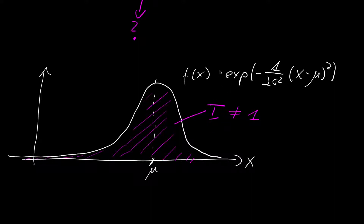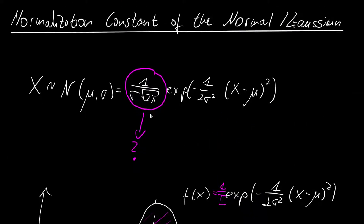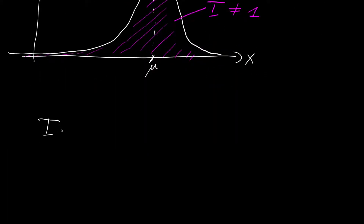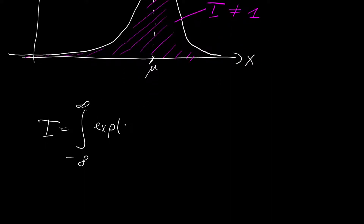So we have to introduce a factor of 1 over I here in order to normalize our distribution. This 1 over I is apparently our normalization constant, but why is there a pi inside? Let's start the derivation. I is the integral from minus infinity to plus infinity of the exponential of minus 1 over 2 sigma squared times x minus mu, squared, dx.